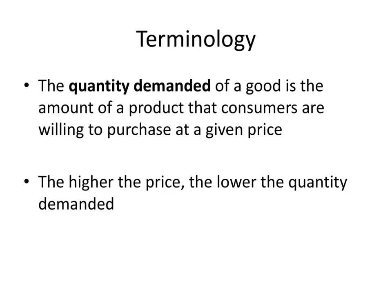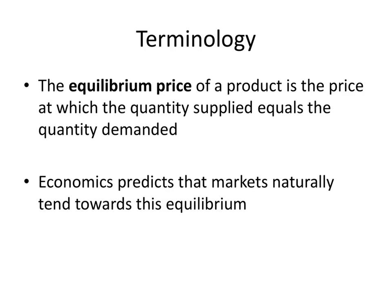Now on the flip side, the quantity demanded of that good is the amount of a product that consumers are willing to purchase at a given price. So if you think about it this way, the higher the price is, the smaller the quantity demanded will be. The higher the price, the less willing consumers will be to purchase it at that price. So we've got these two ideas that are working against each other. And the equilibrium price of a product is the price at which the quantity supplied equals the quantity demanded. And economics predicts that the markets will naturally gravitate towards this equilibrium.